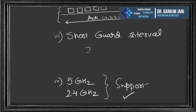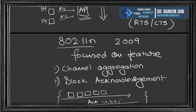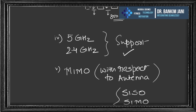Short guard interval is another feature: during communication there is normally an 800-nanosecond zone of silence between chunks. By utilizing even this gap for communication, speed is improved. 802.11n supports both 5 GHz and 2.4 GHz.